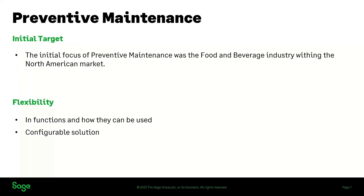The initial target for preventive maintenance was the food and beverage industry within the North American market, as well as a requirement within the discrete manufacturing environment. However, with the design of preventive maintenance we focused on flexibility as well. There is flexibility in the functions and data and how they can be used. Preventive maintenance provides the ability to configure the solution to meet the needs of customers — it's a highly configurable solution.